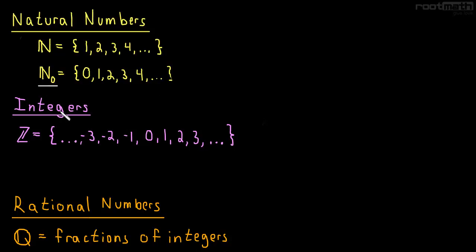If we want to add in zero, we can do that, and sometimes we write that little subscript of a zero. Sometimes we call these the whole numbers, the natural numbers with zero. That's not too important.